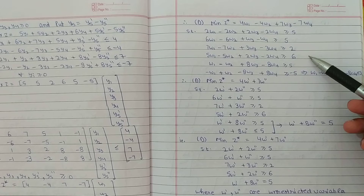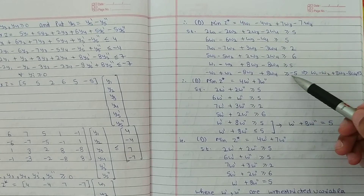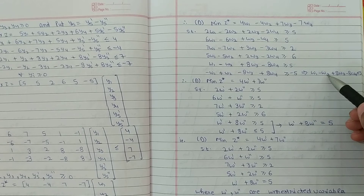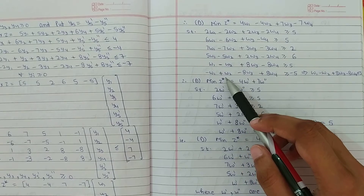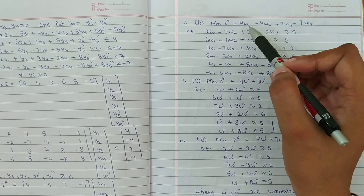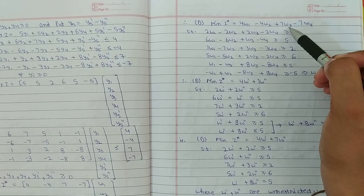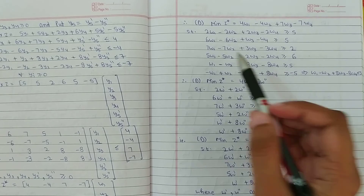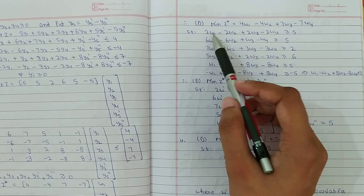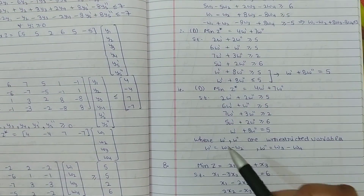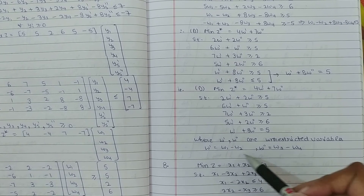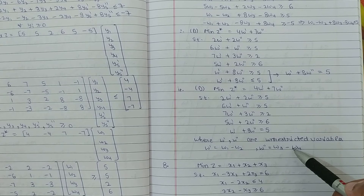Solve करके हमारी constraints बन गईं। जो हमारी last वाली constraint है, उसको minus के साथ multiply करके बन जाएगा: W1 + AW3 − AW4 ≤ 5. यहाँ पे 4 common निकाल के: W1 − W2, plus 7 common निकाल के: W3 − W4. Last में W' = W1 − W2 और W'' = W3 − W4, where W' and W'' are unrestricted variables.